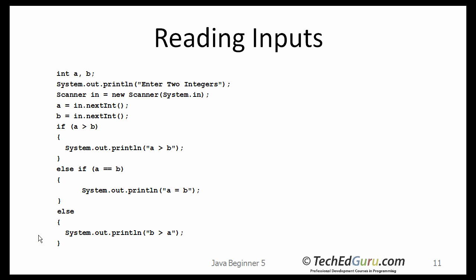I converted one of my earlier examples. Here I have two variables declared, A and B. It's going to say enter two numbers, and when you enter those numbers it will read the first number as A and the second as B. It's going to make a decision based on the inputs you provided, and you can continue running this program again and again with different inputs.